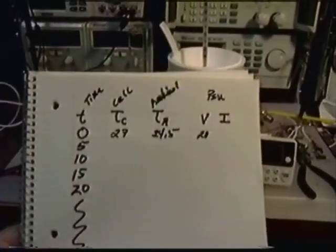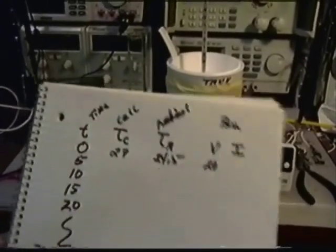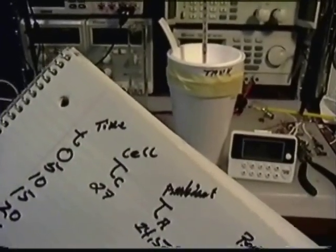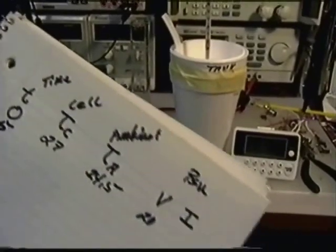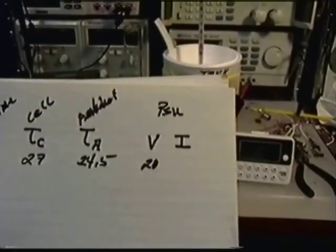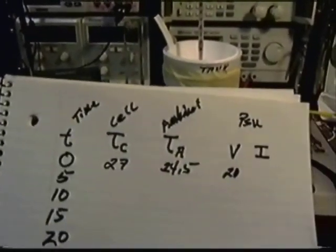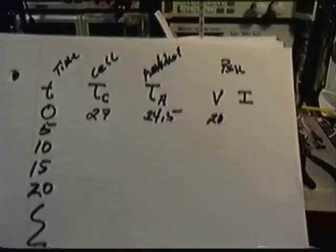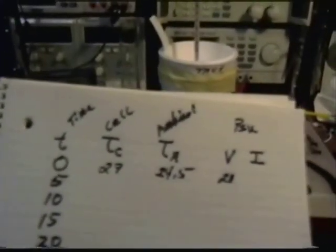Here's the log that I keep. The left-hand column is time in minutes, the cell temperature TC, the ambient TR, and the PSU's voltage and current. We'll do that for an hour, record those readings, and then we can take and make some assumptions.